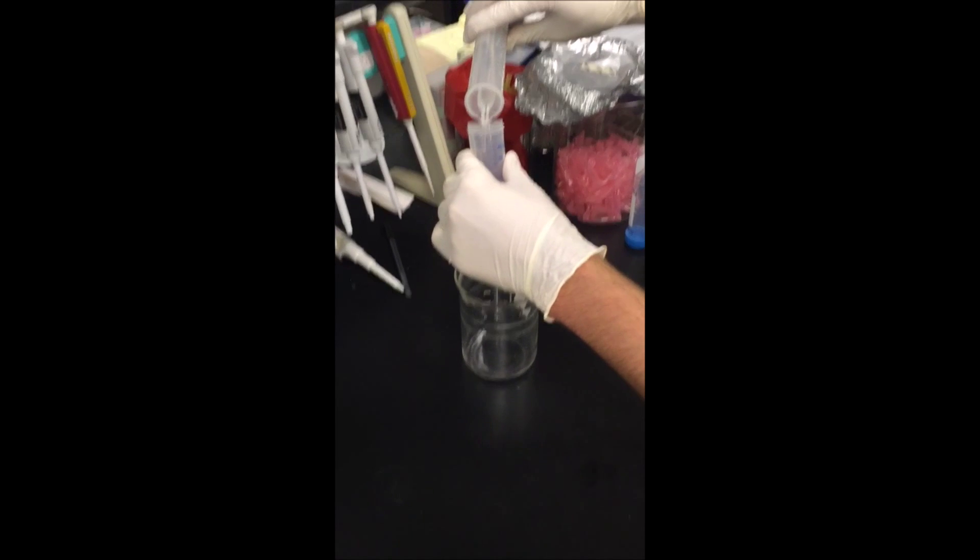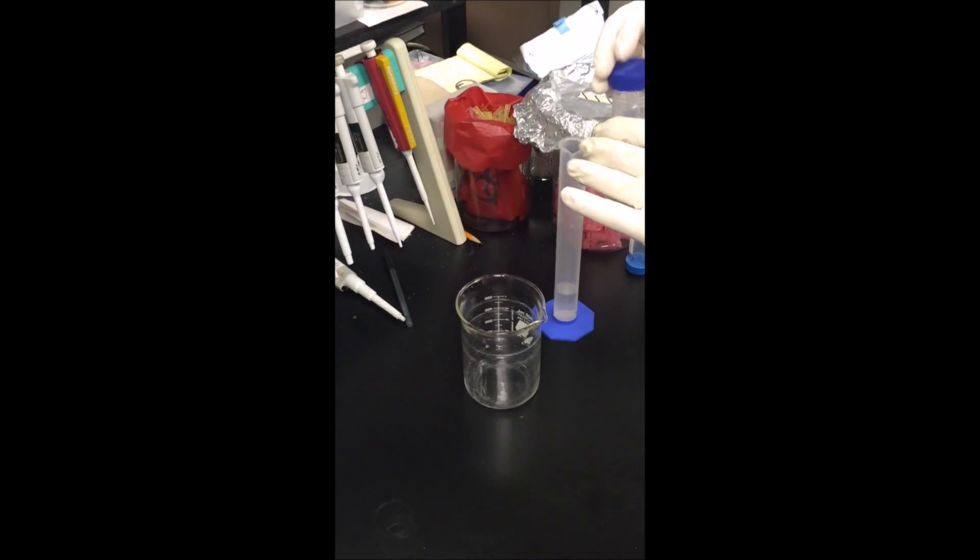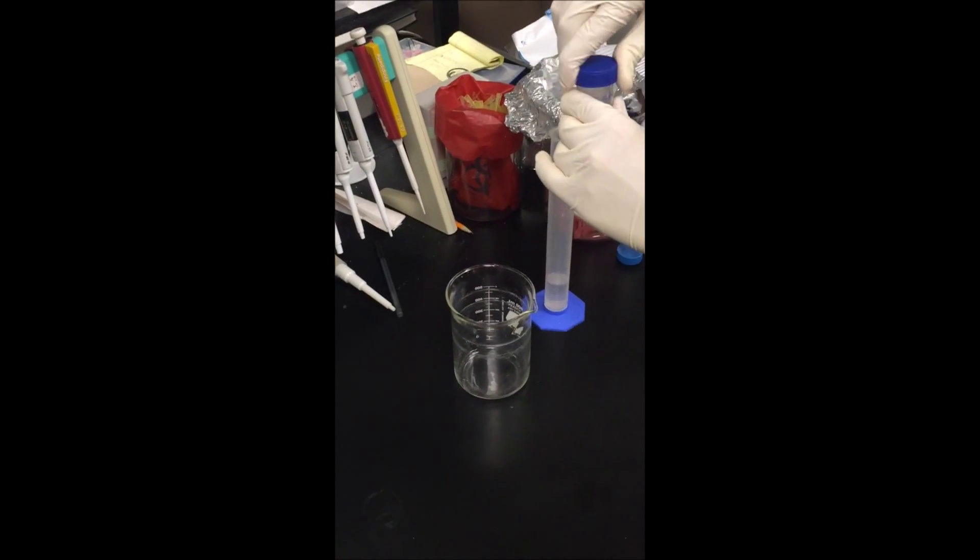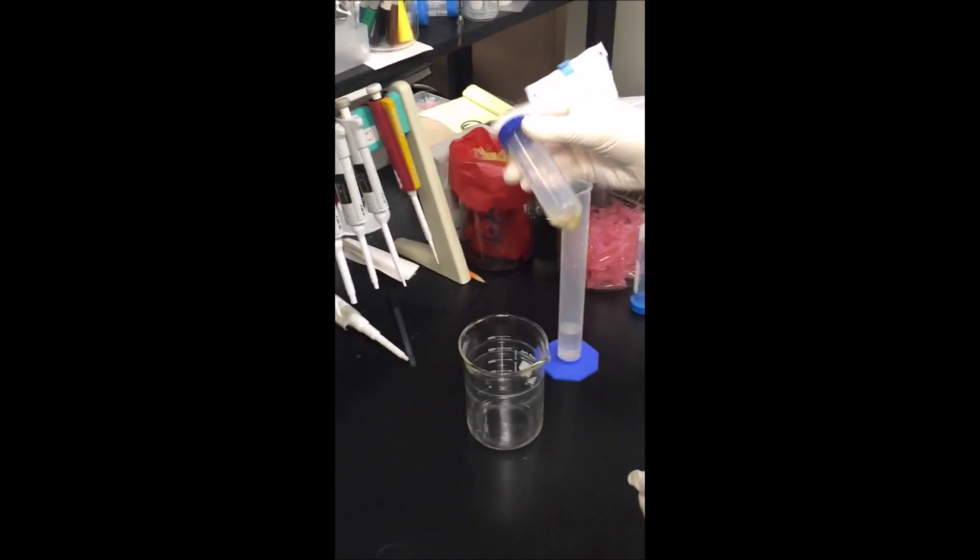So like the bleach, you want to cover your seeds, just be approximate with the volume and then same as before, you invert it several times. Not too rough, be gentle with them.